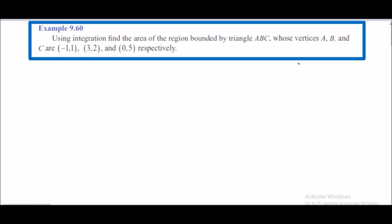Hello students, this is Iqbal. Example 9.60: Using integration, find the area of the region bounded by the triangle ABC whose vertices are A(-1, 1), B(3, 2), and C(0, 5).